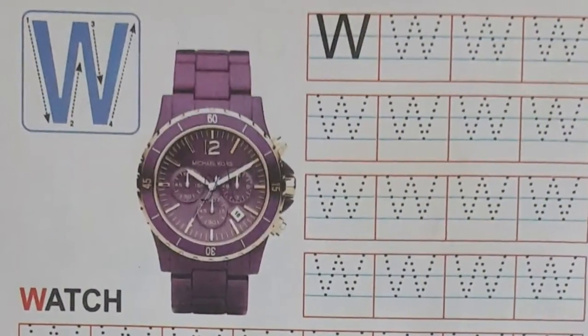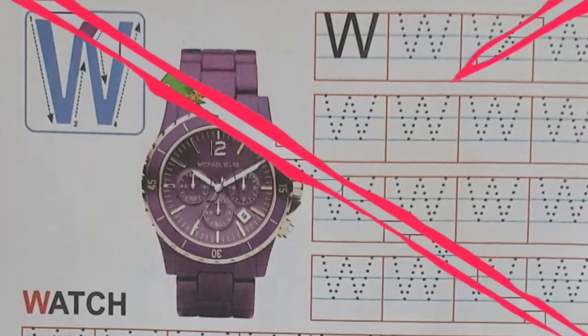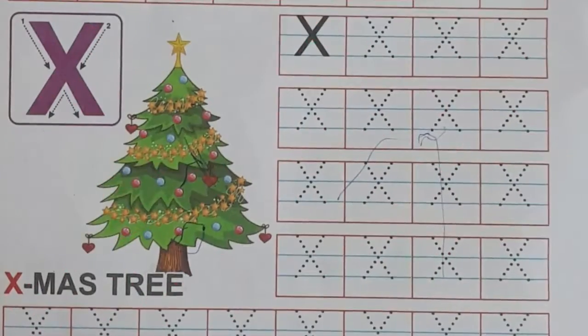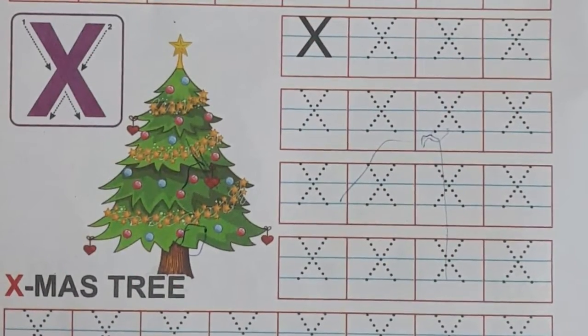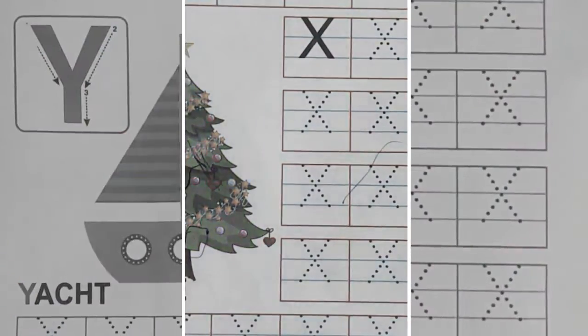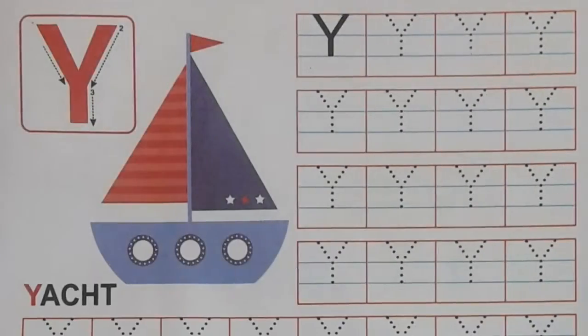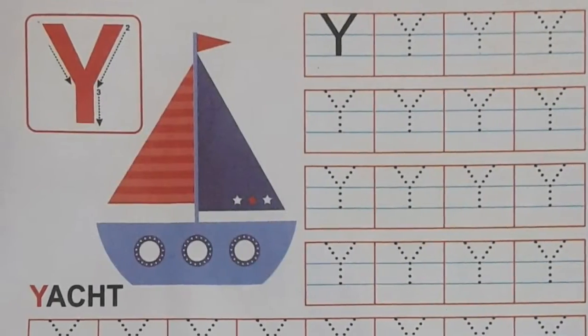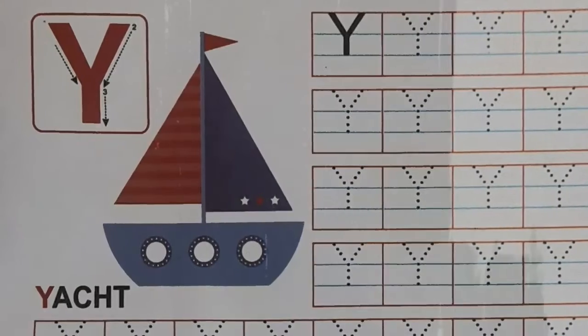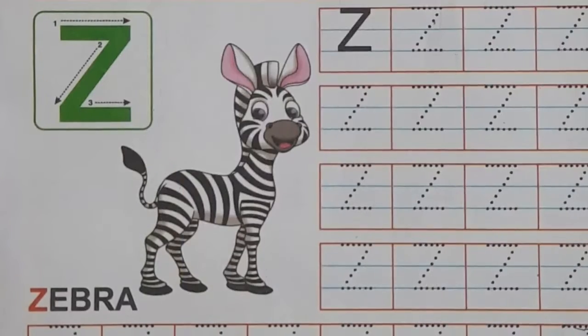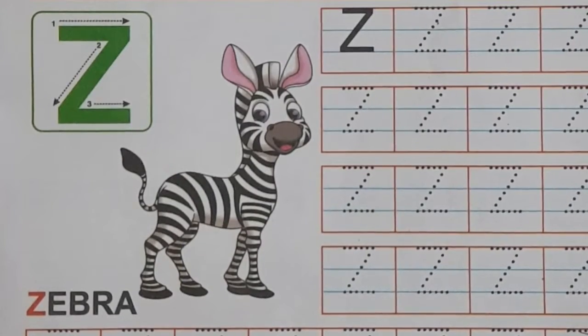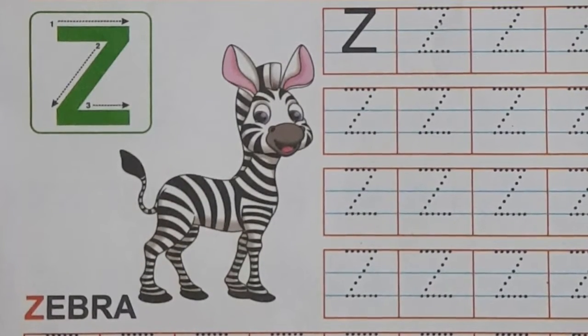W for Watch, X for X-mas Tree, Y for Yak, Z for Zebra.